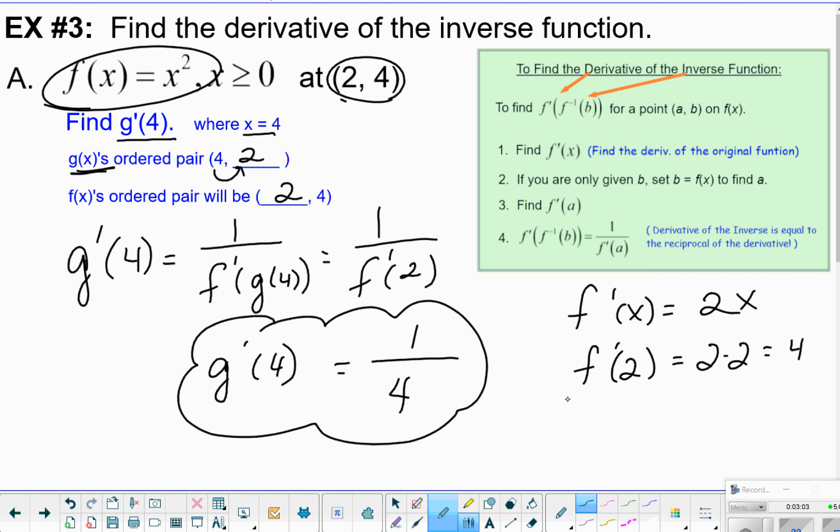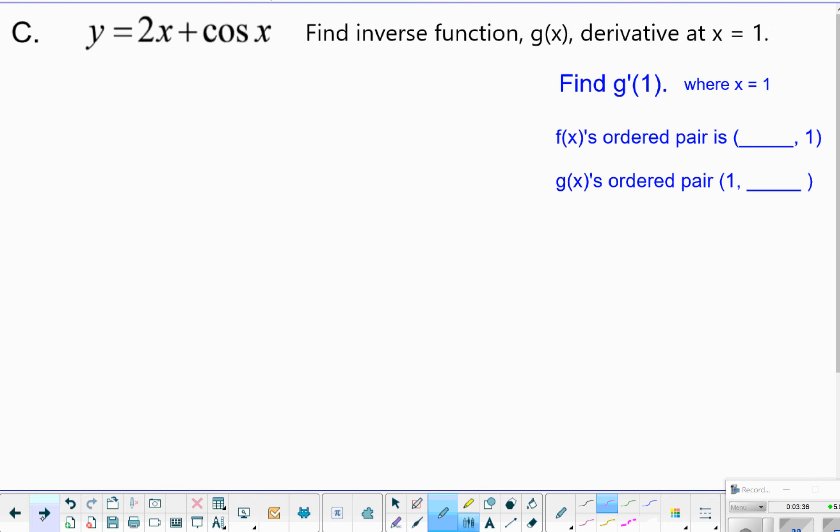So it appears that the inverse's derivative at 4 is 1 fourth. The original function at 2 had a slope of 4. The inverse function at its domain value, 4, has 1 fourth. So they have reciprocal relationships, don't they? 4 and 1 fourth are reciprocals. So it's a reciprocal relationship, not an opposite reciprocal. They're not perpendicular slopes. They are just reciprocals.